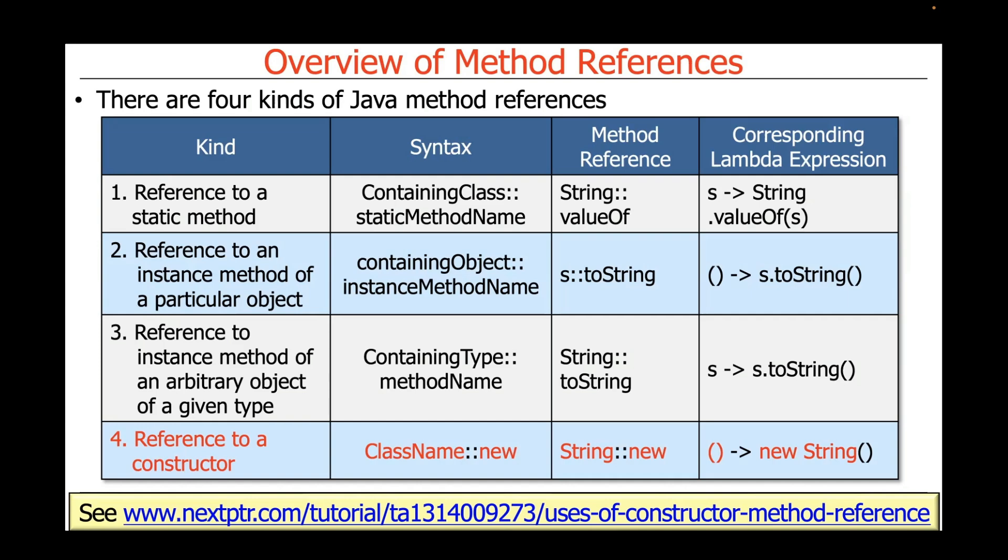The fourth and final kind of Java method reference is a reference to a constructor. And the syntax here is essentially the name of the class colon colon new. For example, if you want to make a new string, you can say string colon colon new, which corresponds to the Lambda expression open close paren arrow new string.